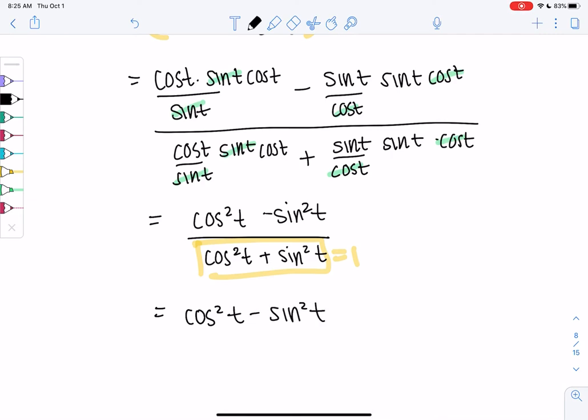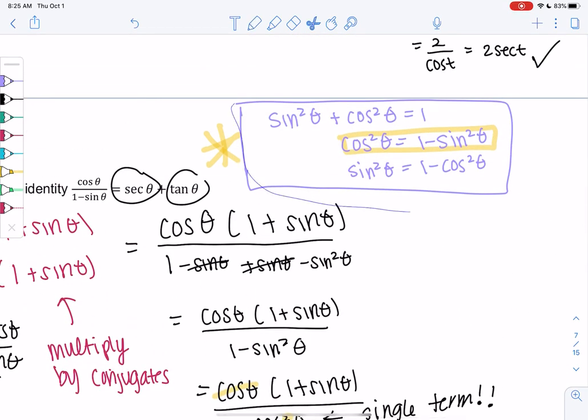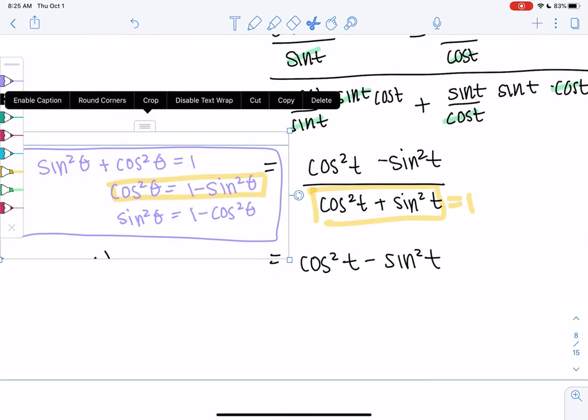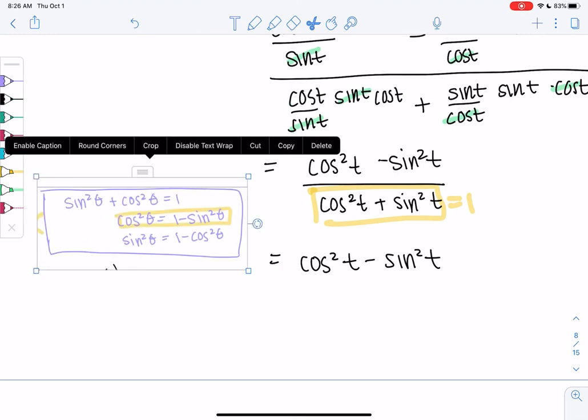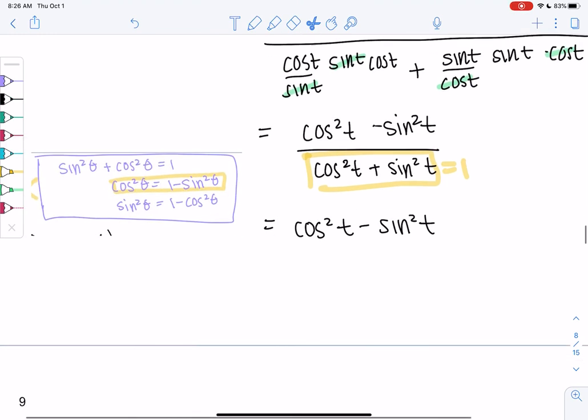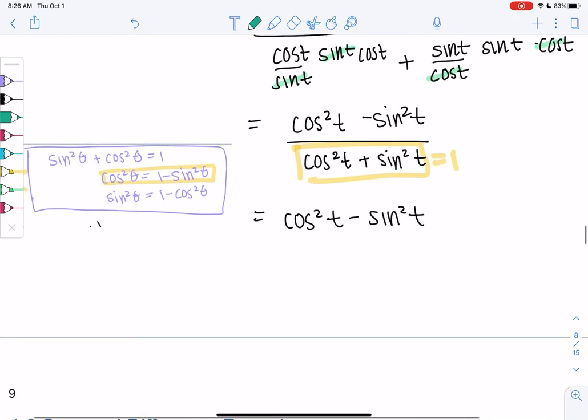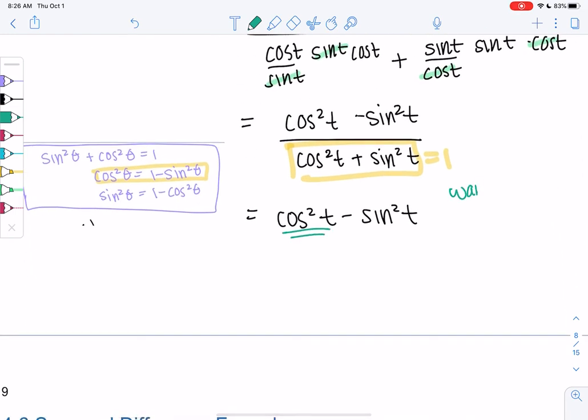I'm just going to mess with those Pythagorean identities. I'm thinking about what I want - the answer is in terms of sine. I think I'm going to keep the sine term and try to find an identity for cosine. Paying attention to what we want is important. I'm going to replace cosine squared with one minus sine squared, and we get one minus two sine squared. We did it!